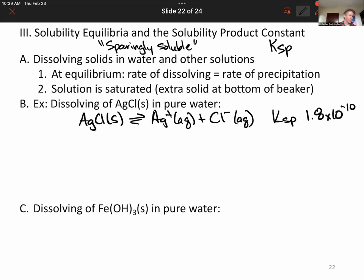Let's write a Ksp expression. Ksp is going to be following all of the same rules as Kc always has. The solid will not appear, so we only have the product. Product means multiply. A product of two terms that are the products. So two uses of the word product there.